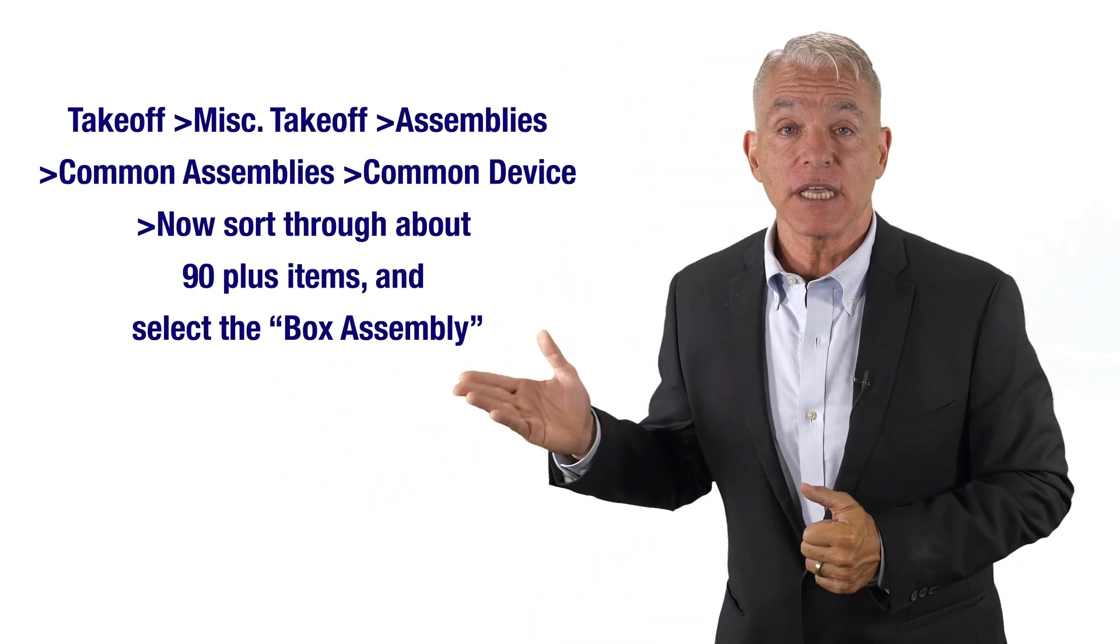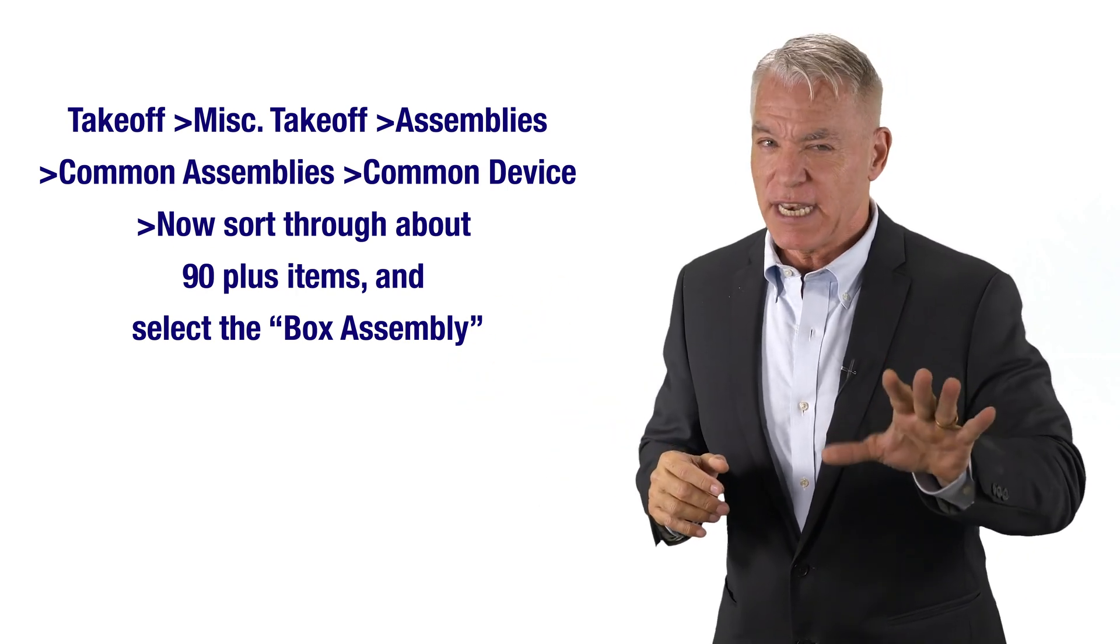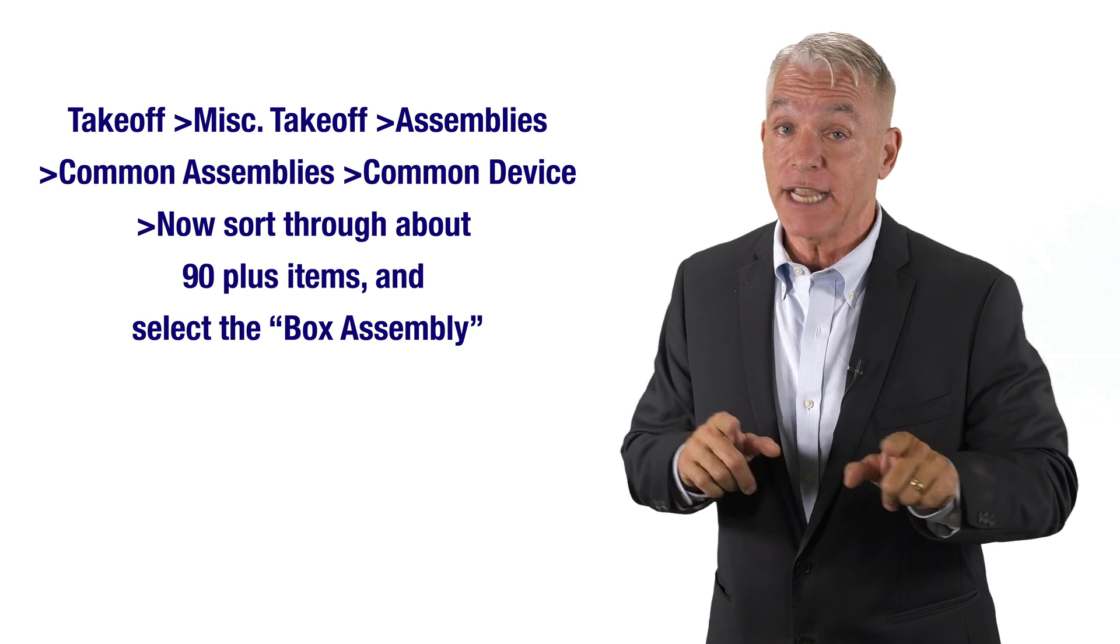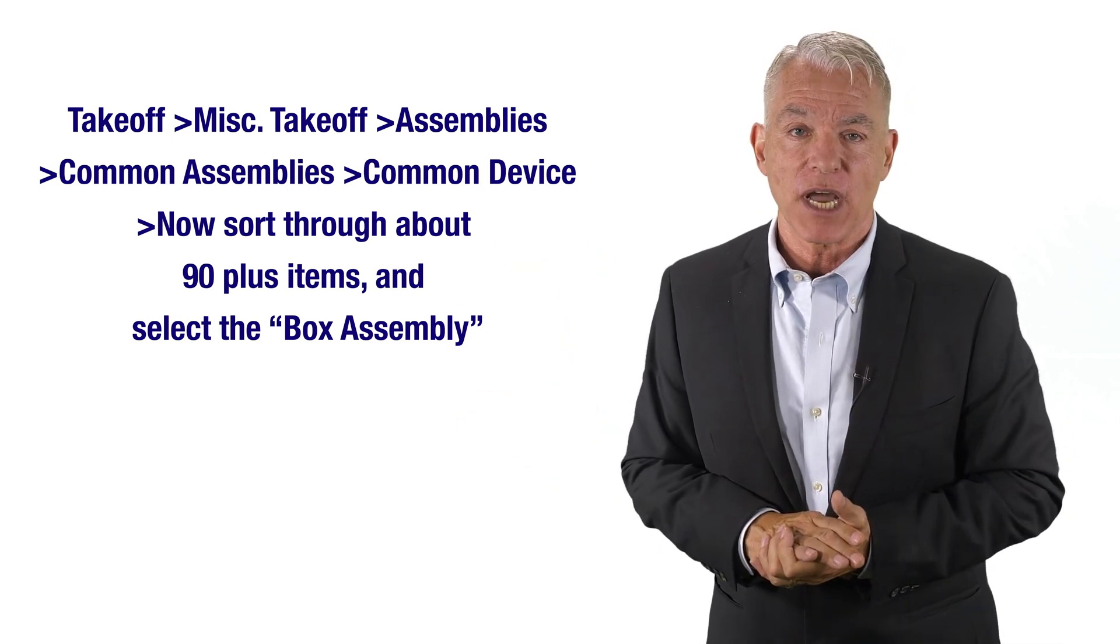Now these are the steps it will take. Take off miscellaneous takeoff, assemblies, common assemblies, common device. Now sort through about 90 plus items and then select box assembly. This will take several steps to memorize but you can learn these and I'm sure in a very short amount of time.